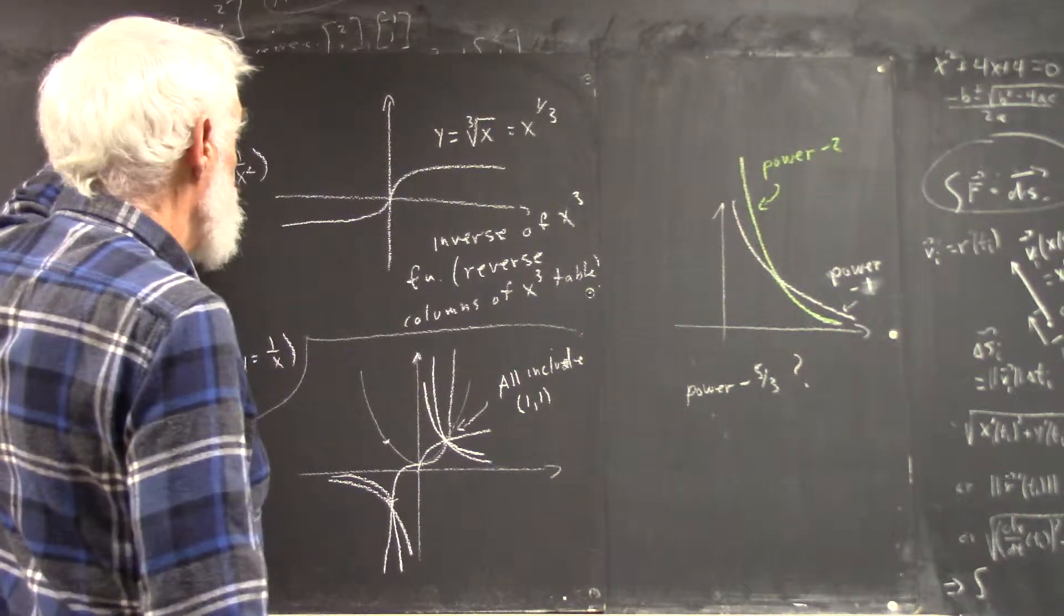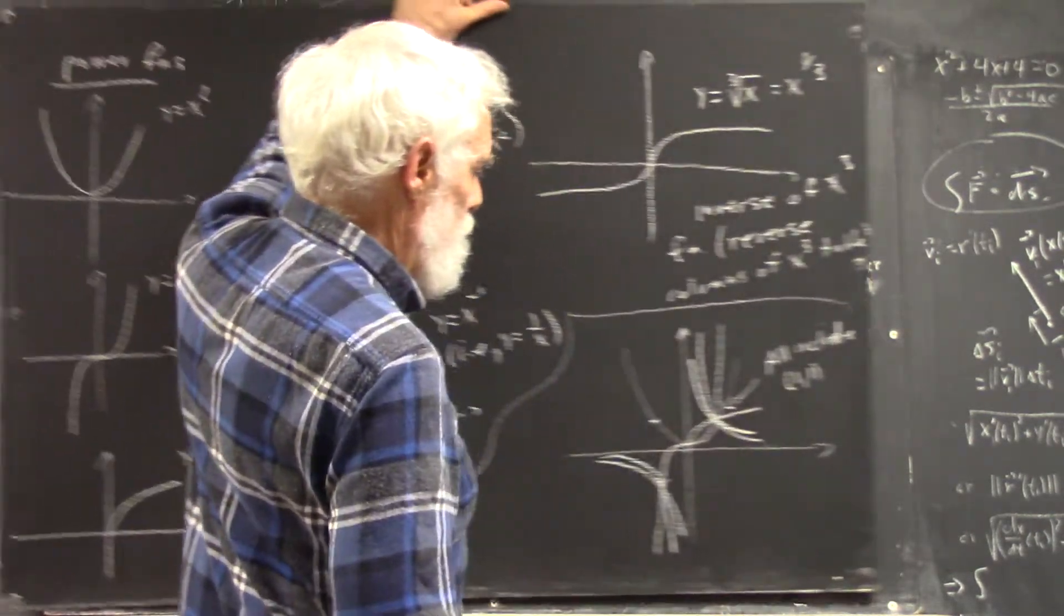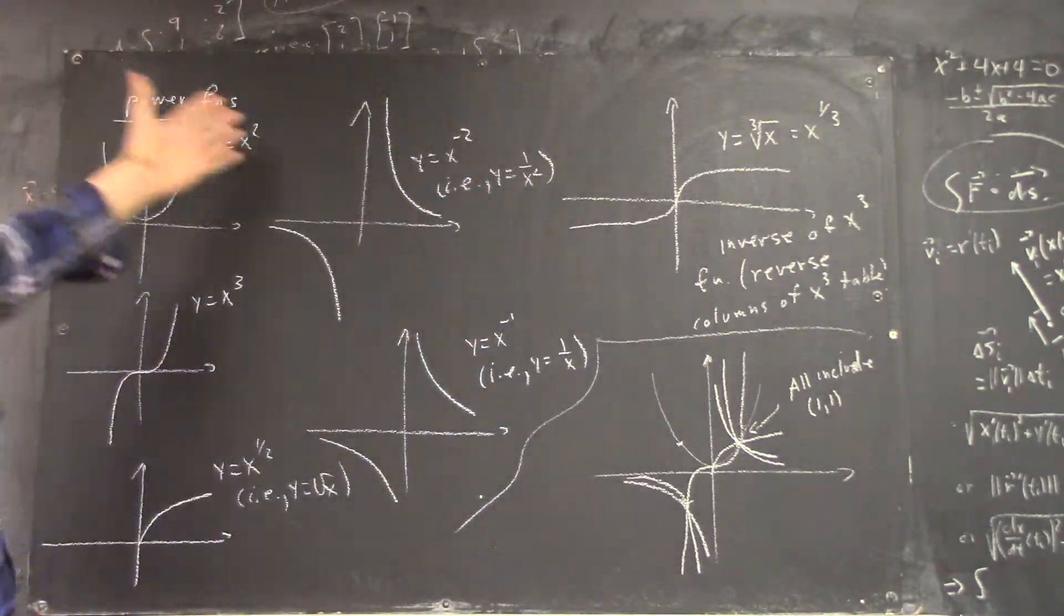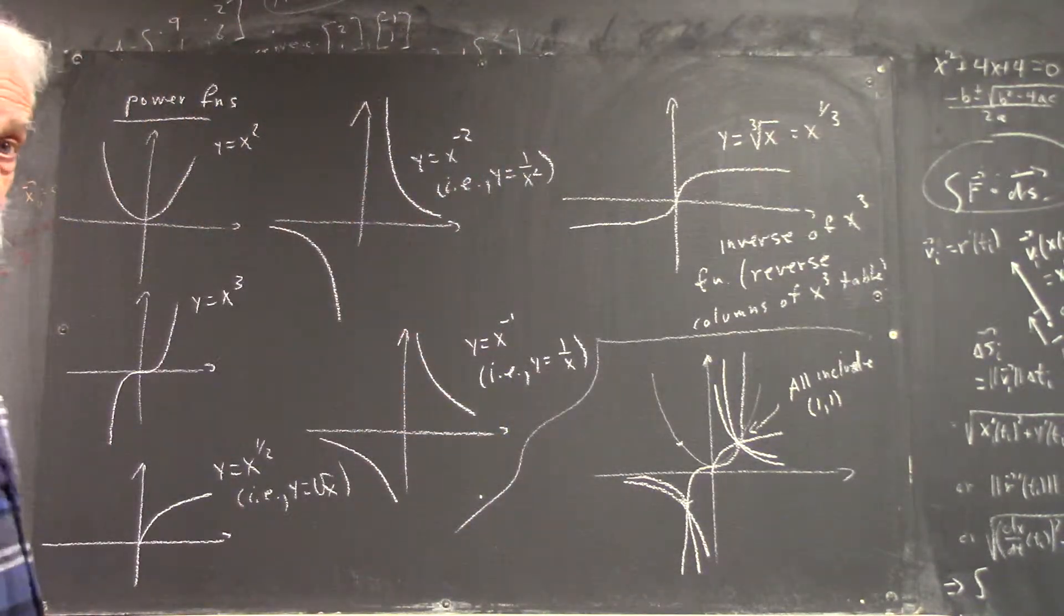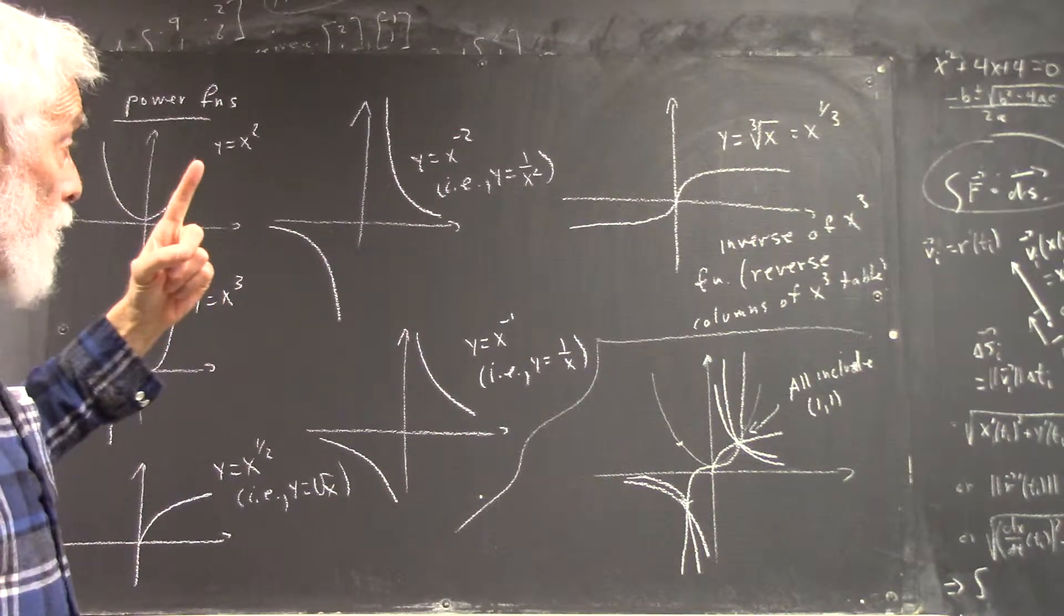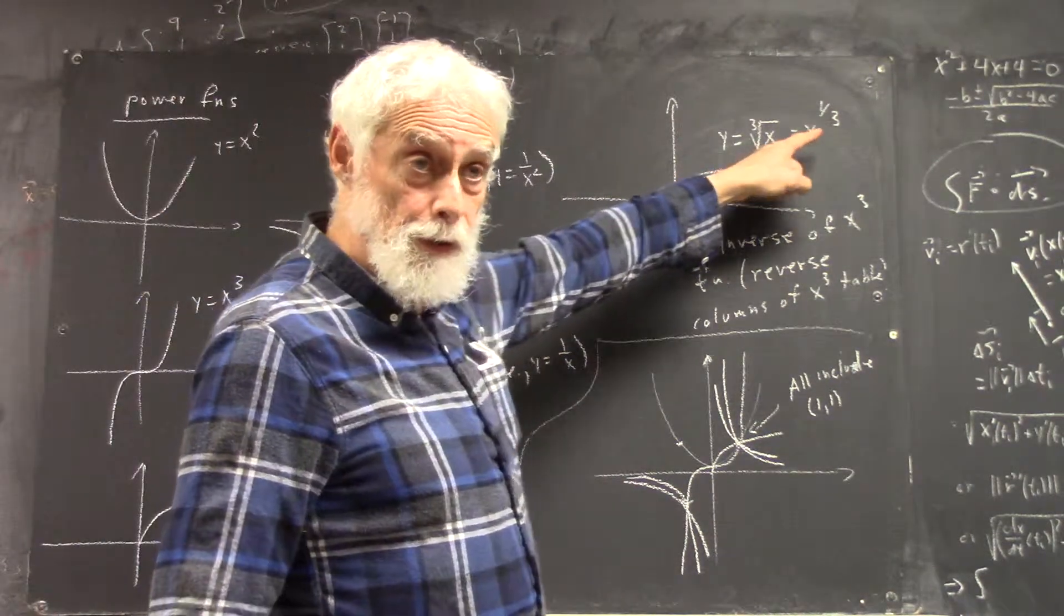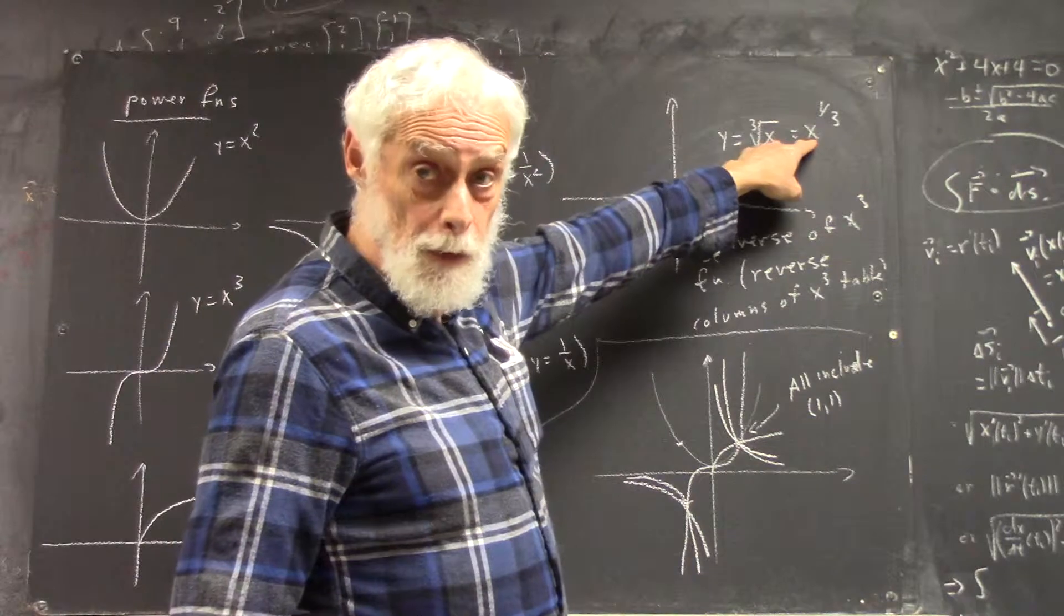Let's put this in context. We have the graphs of our basic power functions. And we add one to that, which is the inverse of the cubic function, which is the cube root or one-third power function.